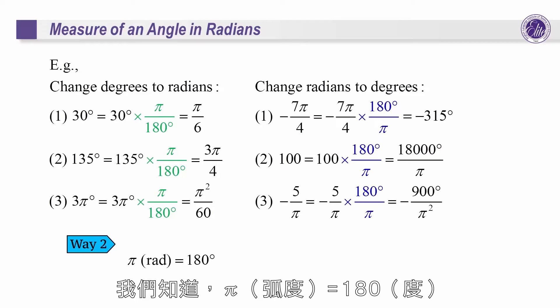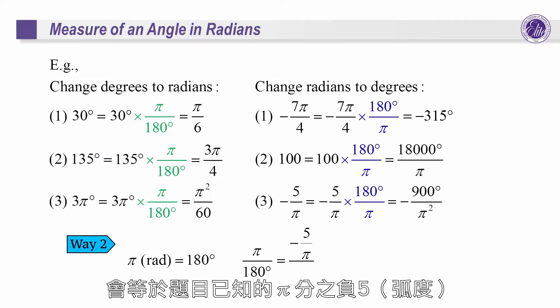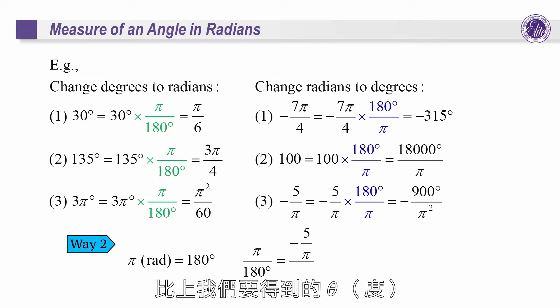As we know, pi radians equals 180 degrees. So pi to 180 degrees equals minus 5 over pi, that's also the radians in example 3, to theta degrees. And theta is the answer we try to get.